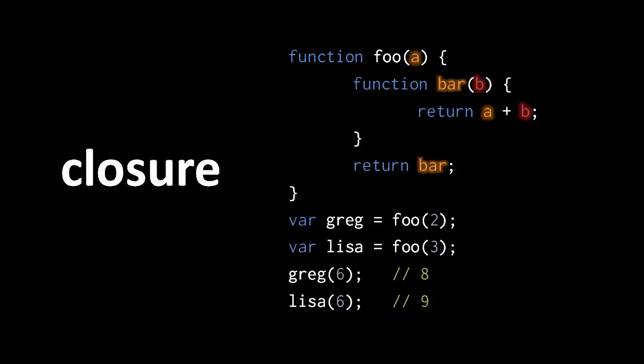Here, the nested function bar returns the sum of its parameter b and the parameter a of its enclosing function foo, and bar itself is returned from foo. So when we call foo with an argument 2, it returns a copy of the function bar for which the retained variable a of foo has the value 2. Likewise, when we call foo with an argument 3, it returns another copy of the function bar for which the retained variable a of foo has the value 3. So be clear, we have two separate copies of the function bar — one assigned to Greg and one to Lisa — and these copies differ in their closures.